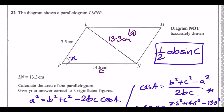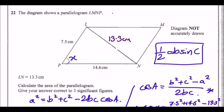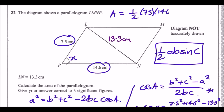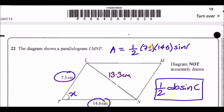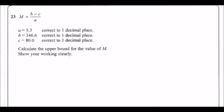Relabelling: area = ½ × 7.5 × 14.6 × sin 65°. Since we want the area of the whole parallelogram, we double this result. When you do that, you should get an area of 99.2 cm².